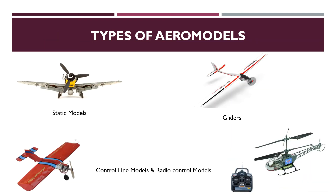Since we know what materials are used, let's learn about the different types of aero models. Static models — these aero models cannot fly and are simply used for displaying and educational purposes. Glider — it is a fixed-wing aircraft that is supported in flight by the dynamic reaction of the air against its lifting surfaces, whose free flight doesn't depend on an engine.